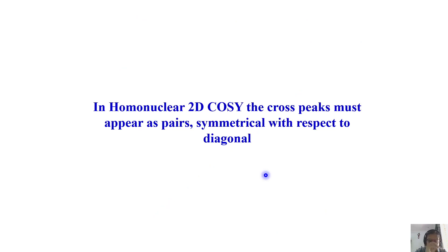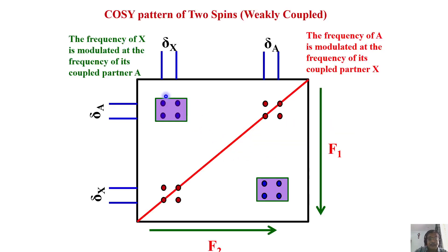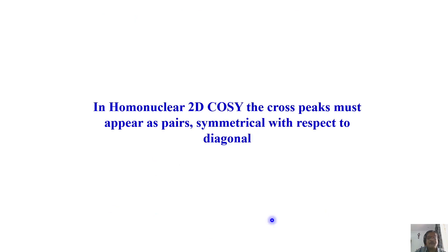In homonuclear 2D COSY, cross peaks must always appear as pairs, symmetric with respect to the diagonal. If A gives a cross peak to X, then X must also give a cross peak to A, and it is perfectly symmetric. This is one of the key patterns of COSY — cross peaks are always symmetric with respect to the diagonal.